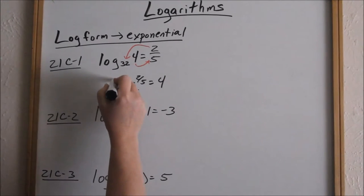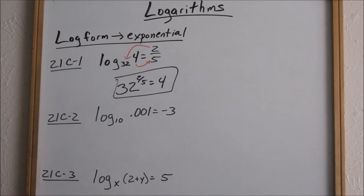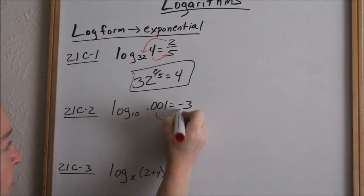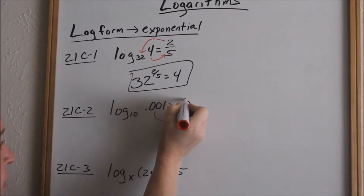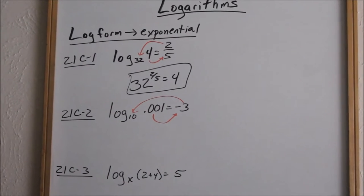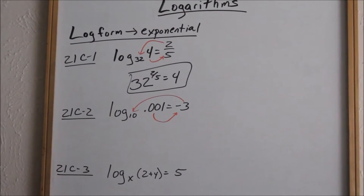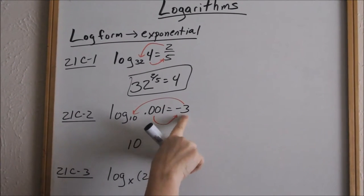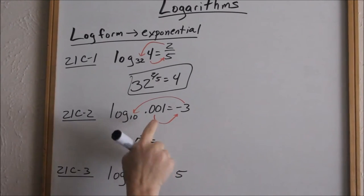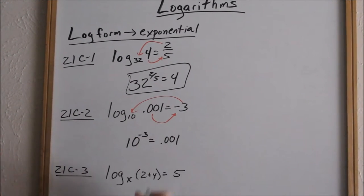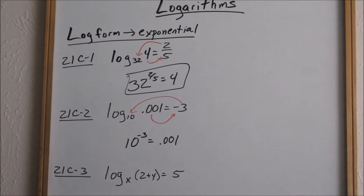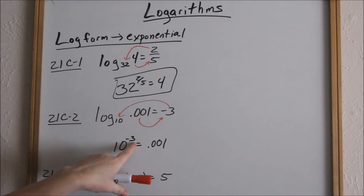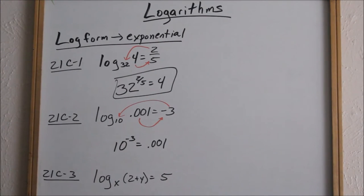Let's look at 21c number 2. We're going to go from log form to exponential form. If you think of it in the circular motion, this becomes your answer, and this over here is your exponent to that. This is log base 10, which means 10 is your base. This is your exponent. 10 to the negative 3 equals this answer. This is a true statement: 10 to the negative 3 equals 0.001, because this becomes 1 over 10 cubed, which is the same as that.